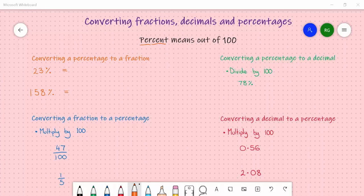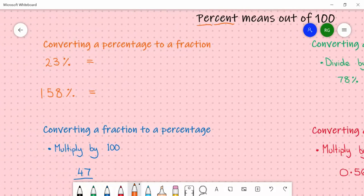So per cent means per 100 or out of 100. So if we look at the orange section first, converting a percentage to a fraction.